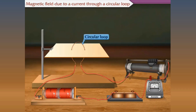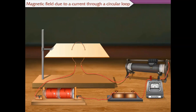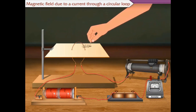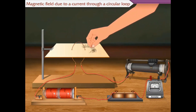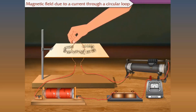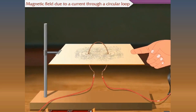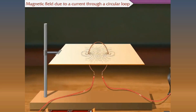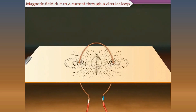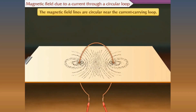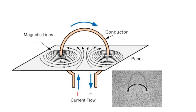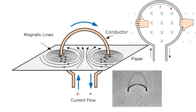What will happen to the magnetic field lines when the straight conductor is bent into a circular loop? We sprinkle some iron powder around the loop. After some time, we will see that magnetic field lines are produced at each point of the loop. The magnetic field lines are circular near the current-carrying loop. Again, we can use the right-hand grip rule to check the direction of the magnetic field lines near the loop.